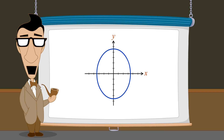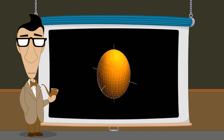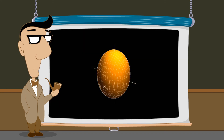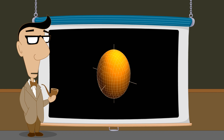In the next lecture, we will see how a three-dimensional Cartesian coordinate system can be constructed, which will allow us to visualize sets of ordered triples in three dimensions.